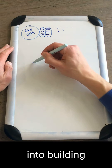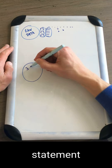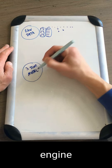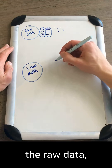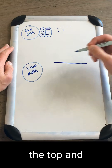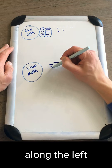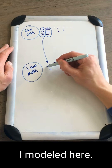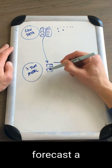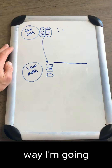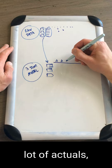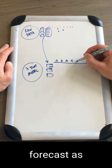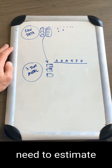The next thing I'm going to do is jump right into building out a three statement model — this is the primary engine that runs the entire file. Similar to the raw data, I'll have dates along the top and line items along the left side, but these are composed of the buckets I model. It's going to have actuals for time that has already gone by, and then forecasts for what I need to estimate about the future.